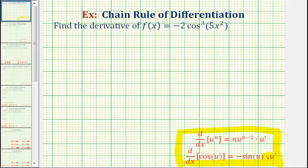So the most important thing when applying the chain rule is to identify the inner function. So looking at f(x), since we have the cosine function being raised to the third power,